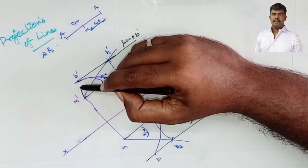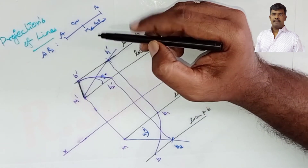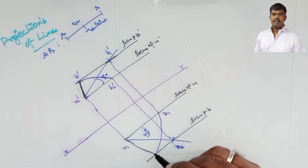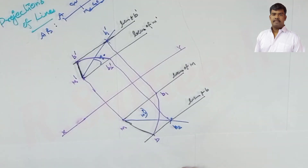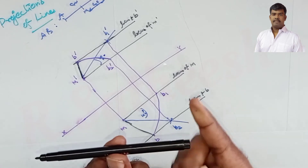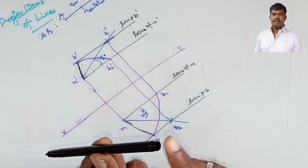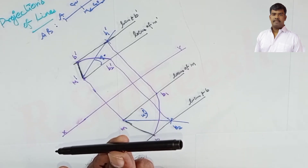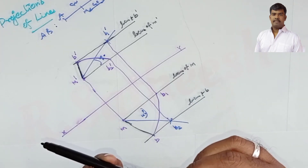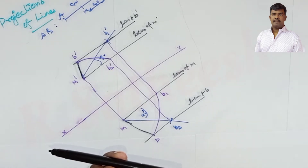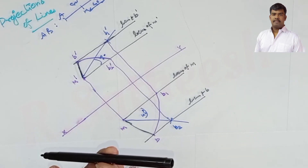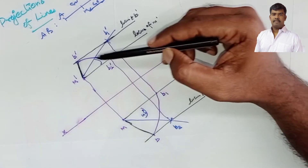Now, m-dash to b-dash is half of the elevation length, since we took only half the true length. Similarly, m to b is half of the plan length. Since the line is inclined to HP, end B goes upward, so automatically end A comes down by the same inclination. Similarly, B is away from VP at 45 degrees, so A is towards VP at the same inclination. Therefore, the projection from M to B is the same as from M to A.